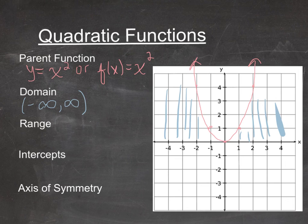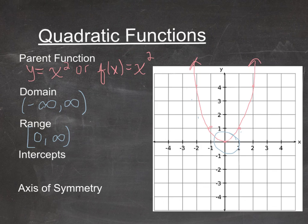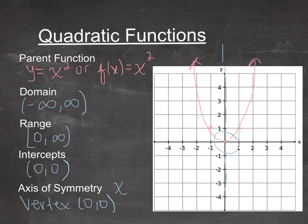The range: looking at the y-axis, the lowest point on the parabola is at the vertex (0, 0), so there is a minimum. The range is from 0 up to positive infinity, and we include 0 with a square bracket. The intercept is at the origin (0, 0). The axis of symmetry is the x-value from the vertex — a line that splits the graph exactly in half. If you fold over the y-axis, both sides match up, so the axis of symmetry is x = 0.